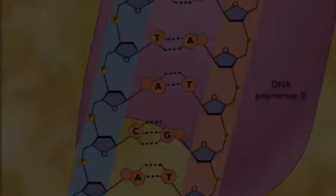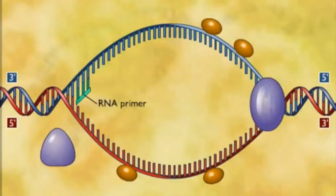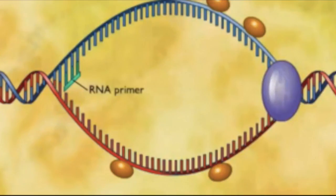The enzyme primase synthesizes the RNA primer, starting a complementary RNA chain from a single RNA nucleotide and adding RNA nucleotides one at a time using the parental DNA strand as a template. The initial nucleotide chain produced during DNA synthesis is a short stretch of RNA called a primer. The primer is 5 to 10 nucleotides long and base paired to the template strand.